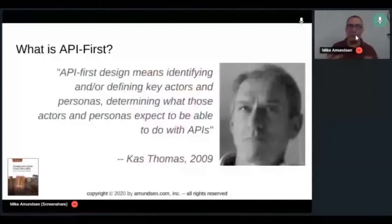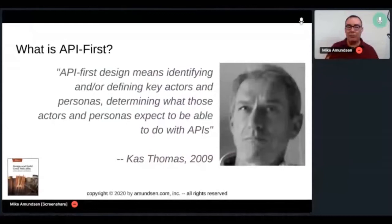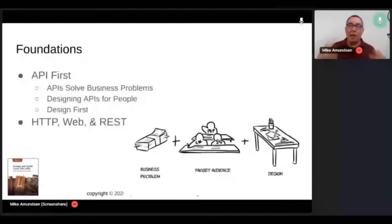So the first foundational element I like to talk about is API first. So I learned about this from Cass Thomas in 2009. This idea of designing means identifying key actors and people. And what is it they're trying to do with APIs? APIs are here to solve a problem. To solve a business problem, to solve a group's problem, to solve an individual's problem. And that's what we really need to do. When you think API first, what you're really thinking about is first, what is the problem? And how can I help solve it?